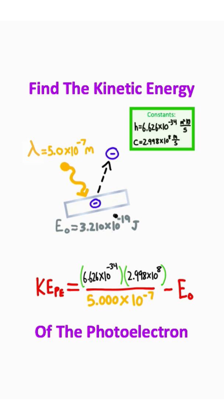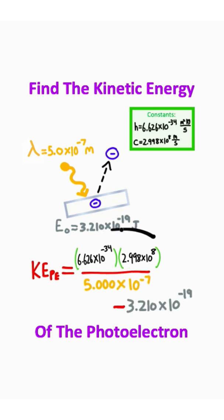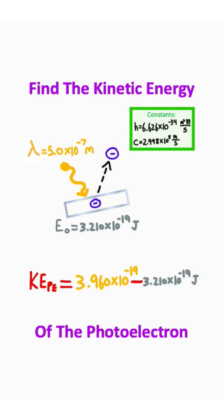Now what I need to do is subtract off the work function. This should be the equation I get. So let's first go ahead and evaluate this fraction. Multiplying the two constants and then dividing them by the wavelength, that should give you this value.